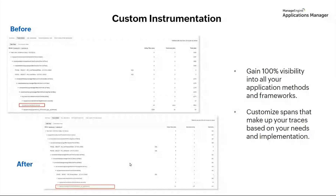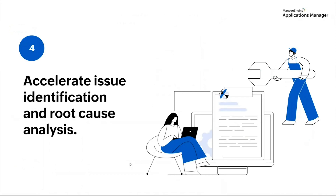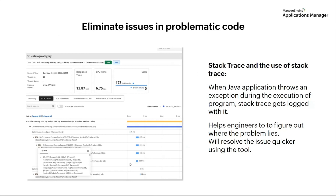Let's move on to the next topic: accelerating issue identification with root cause analysis. The first thing we'll discuss is how to eliminate issues related to problematic code. A stack trace represents a moment in an application during the execution of a program. When a Java application throws an unexpected exception, the stack trace gets logged with it. By analyzing this stack trace, developers can pinpoint the exact line of code and the sequence of function calls leading to the issue. This information helps them understand the root cause of the problem and resolve it by elevating application performance.